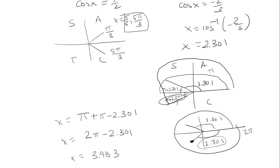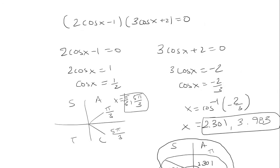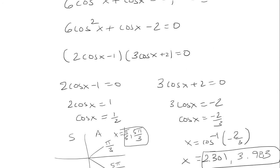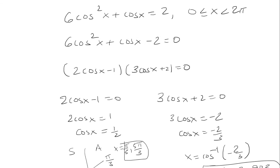So if we go back to our answers, I'm going to add it to this list. And keep in mind, I do have 4 answers. Pi over 3, 5 pi over 3, 2.301, and 3.983 for the original question of 6 cosine squared plus cosine x equals 2.